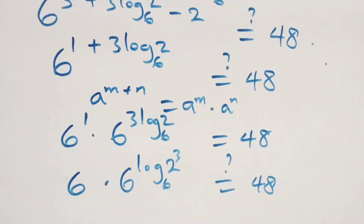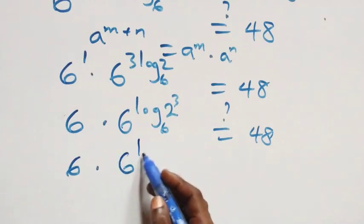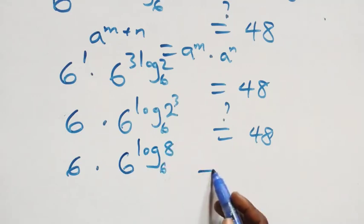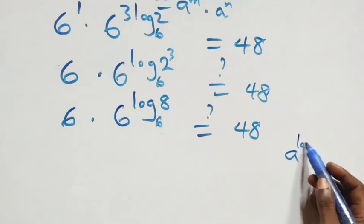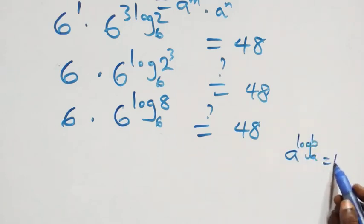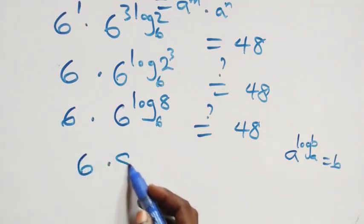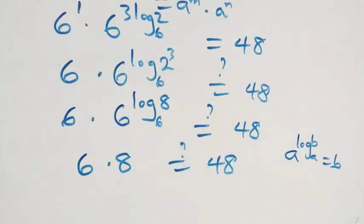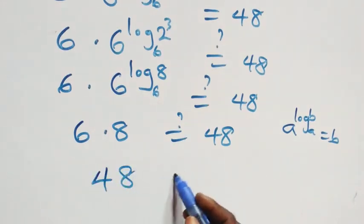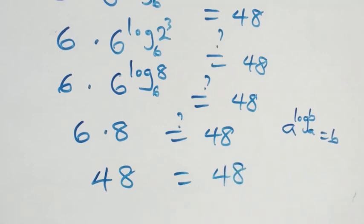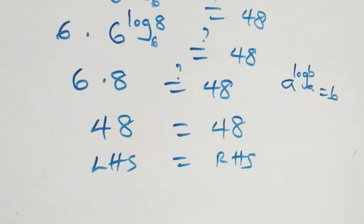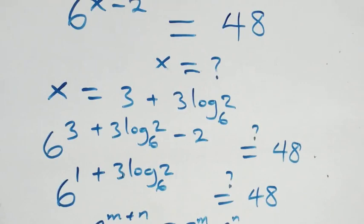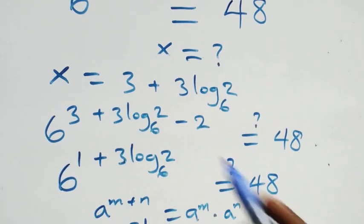This follows the identity: a raised to power log base a of b equals b. So six raised to power log base six of eight equals eight. Therefore we have six times eight equals forty-eight on the right-hand side. And six times eight is indeed forty-eight, so the left-hand side equals the right-hand side. Hence we can conclude that x equals three plus three log base six of two satisfies this given problem.